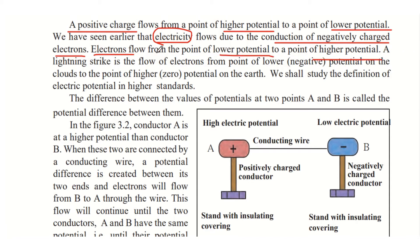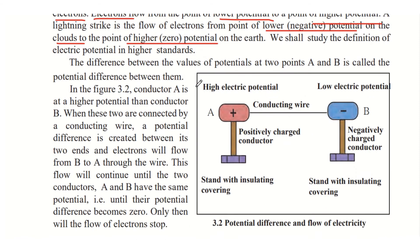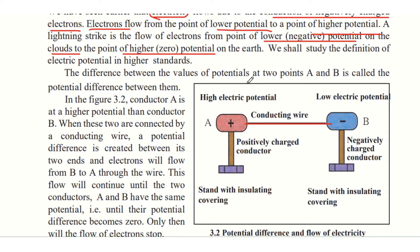A lightning strike is the flow of electrons from a point of lower or negative potential in the clouds to the point of higher or zero potential on the earth. Since zero is greater than any negative value, electrons travel from the clouds to the earth's surface. The difference between the values of electric potentials at two points A and B is called the potential difference between them.